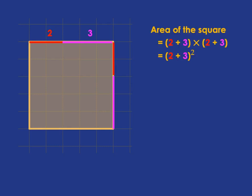Now, considering the same square but just viewing that side length of 5 as being made up of a 2 and a 3. Well, what will the area be? We know it's just going to be the side multiplied by the side. So it's going to be 2 plus 3 multiplied by 2 plus 3, which we can write as 2 plus 3 all squared.